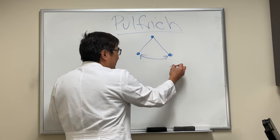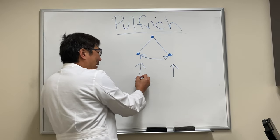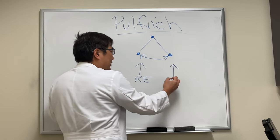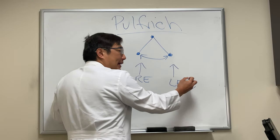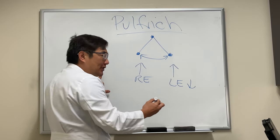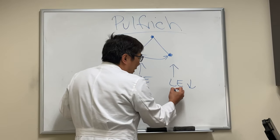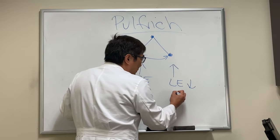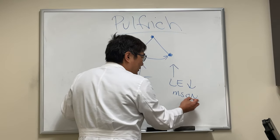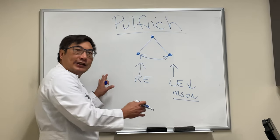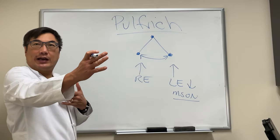However, if you have a delay in what the right eye is seeing versus the left eye is seeing, and that delay happens to be caused by multiple sclerosis-related optic neuritis, there will be a conduction deficit in one eye.